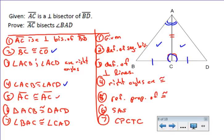And if we've shown that those two angles are congruent, by definition we can say then that AC bisects angle BAD, and that is just because of the definition of angle bisector.